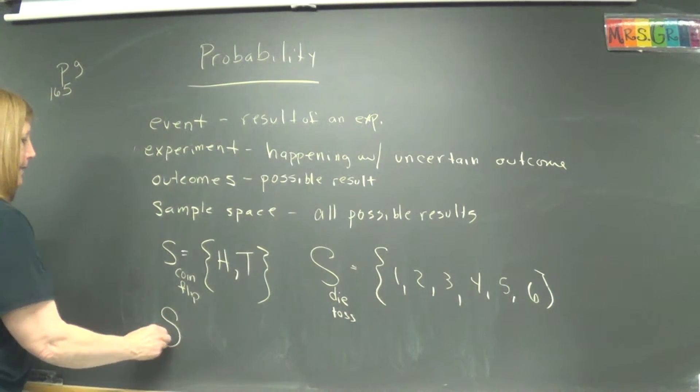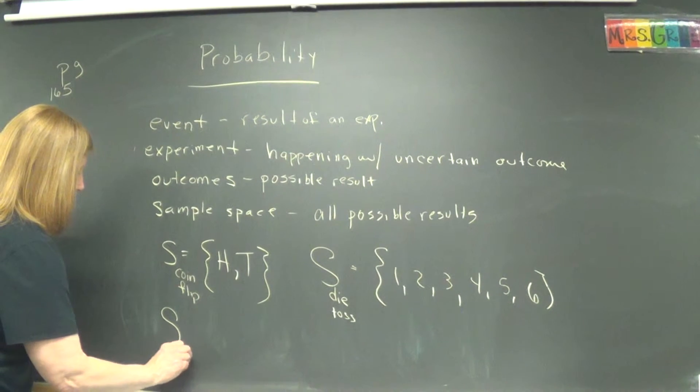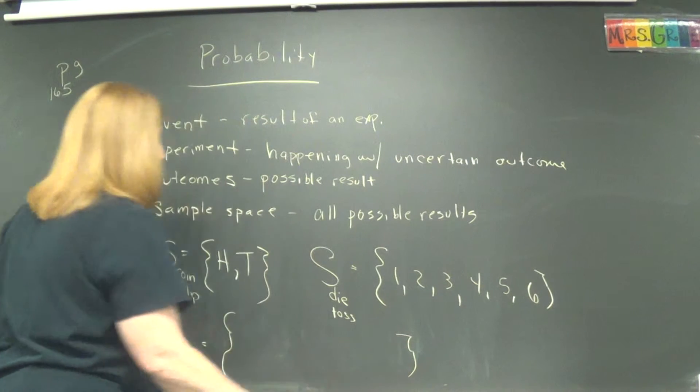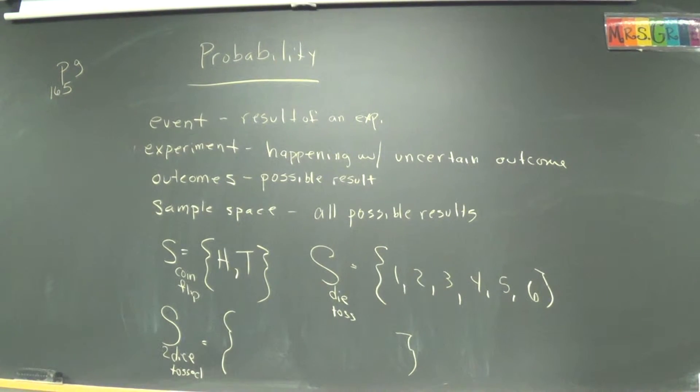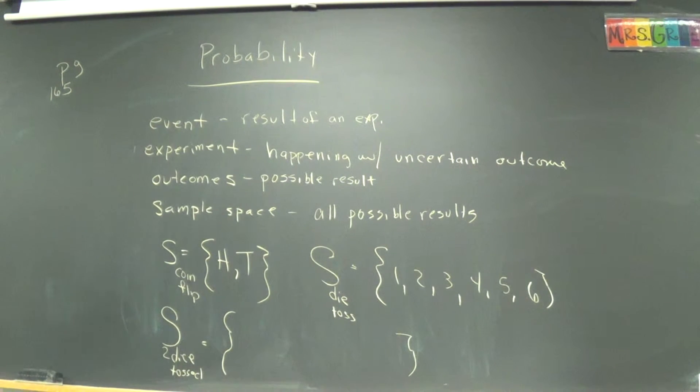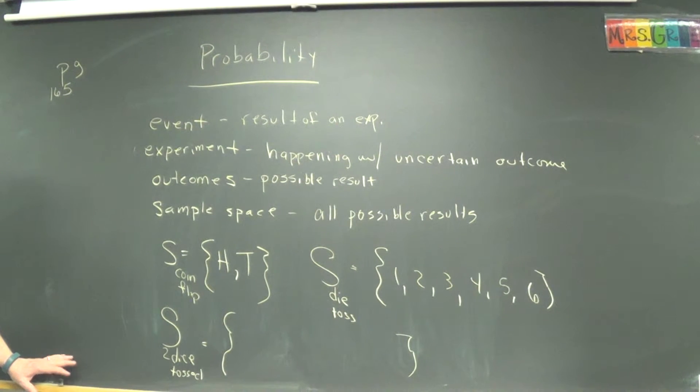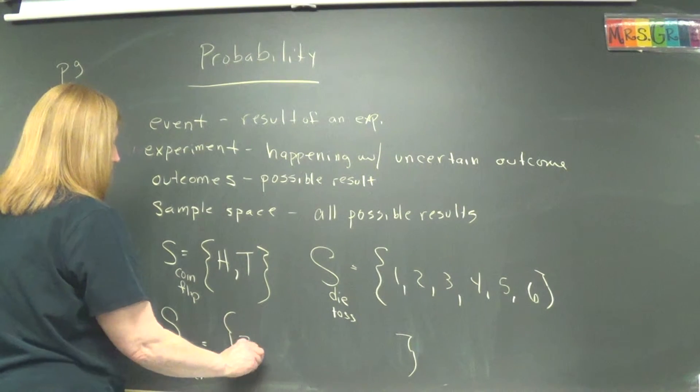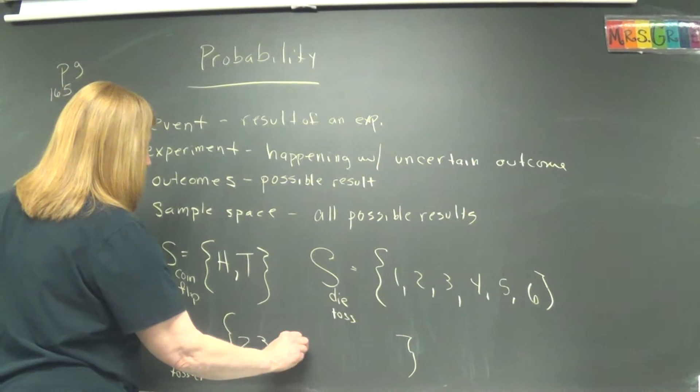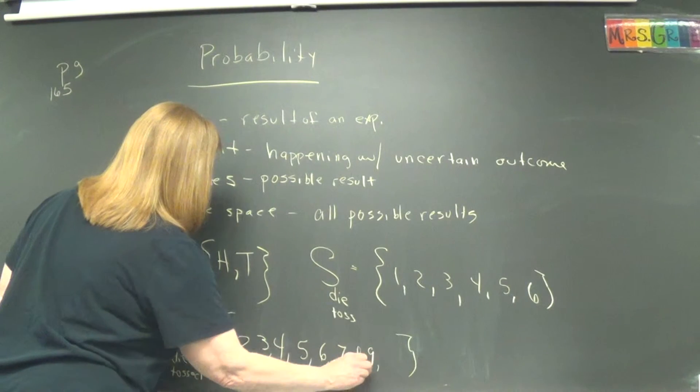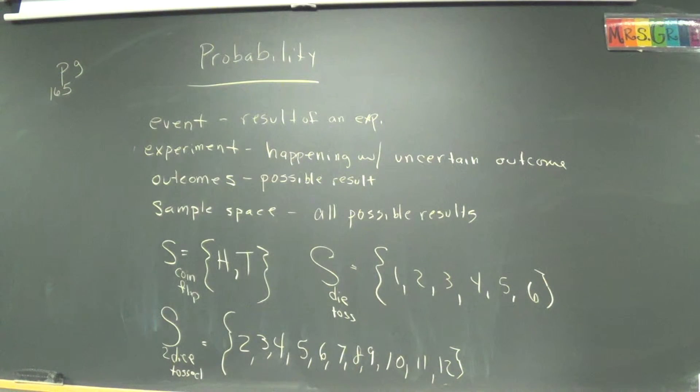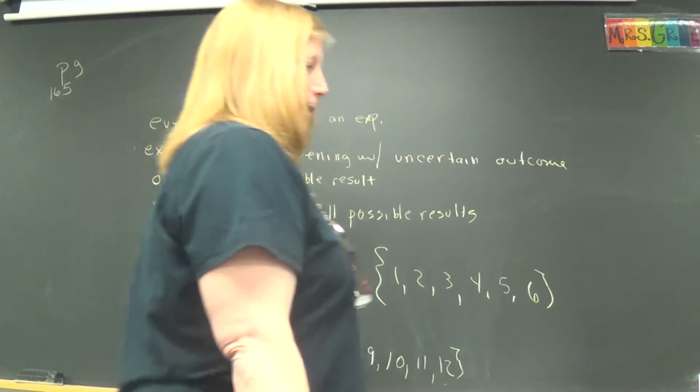All right. Let's get fancy now. What is the sample space for two dice tossed? What is the sample space there? So once you catch up on these notes, start listing the sample space for two dice. How many should be in there? Twelve. Can you have a one in the sample space? When you roll two die, can you possibly get a one? What's the lowest number? Two. So you can get a two. Can you get a three? Yeah. Four? Yeah. All right. Where does it stop? Twelve. All right. Do you see how this is the only possible outcomes for a toss of two dice? Nice.